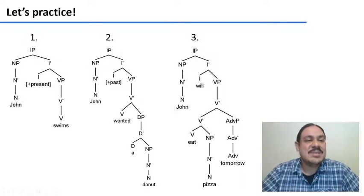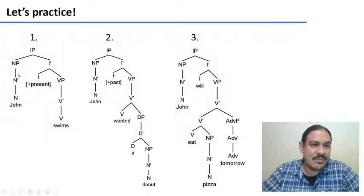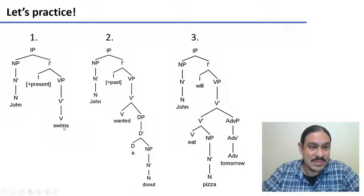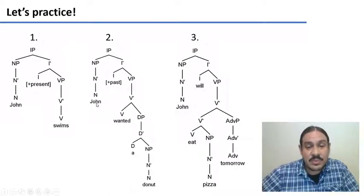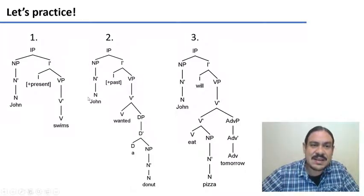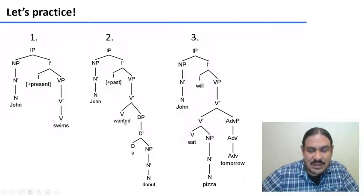Let's check them out. 'John swims' is an inflected phrase that is inflected in the present tense. The subject of the phrase is the spec of IP — the noun phrase 'John.' The inflected phrase has the verb 'swims,' which is intransitive, so it does not need a direct object. For the second one, 'John wanted a donut,' we have a phrase inflected in the past tense. The subject is the noun phrase 'John,' and the past tense inflection is for the verb 'wanted.' Wanted is a transitive verb, so it needs a direct object as its complement — the determiner phrase 'a donut.'